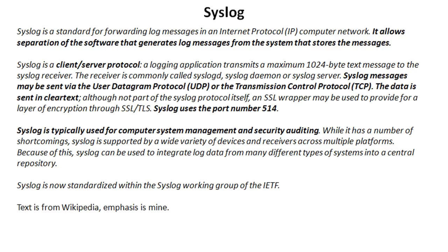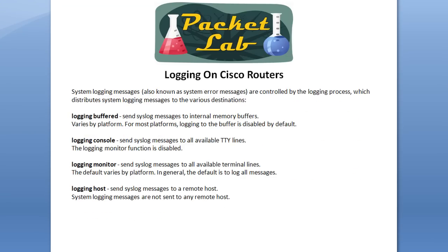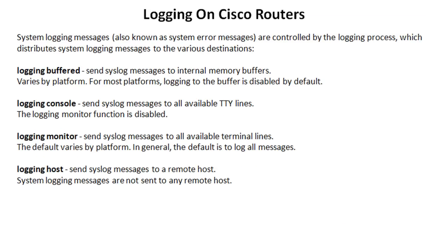There are commercial and free pieces of software out there that are really good, but a lot of places just go ahead and use a Unix box. Logging and Syslog are going to be synonymous terms throughout this lesson. On a Cisco router — and of course this works on switches as well — system logging messages, Syslog messages, or system error messages, whichever term you choose to use, they're controlled by the logging process. That process is going to distribute these Syslog messages to various destinations based on the configuration.